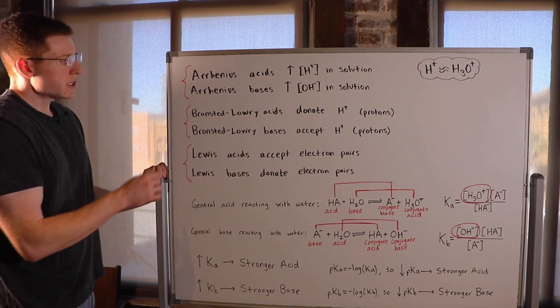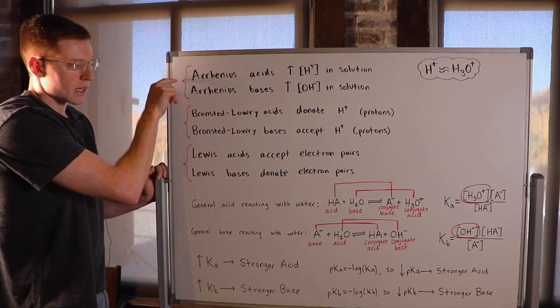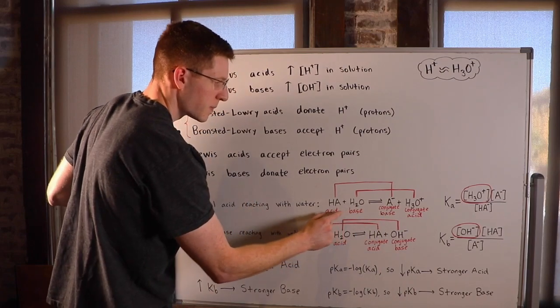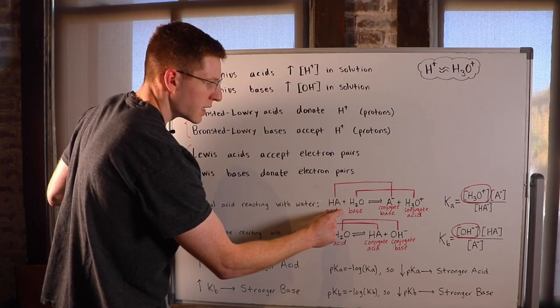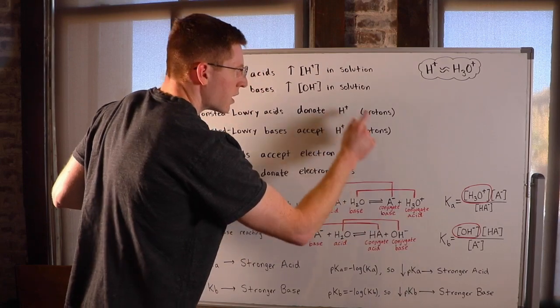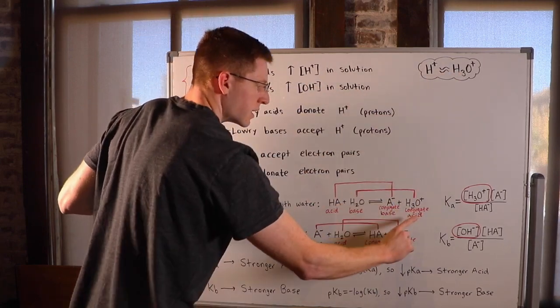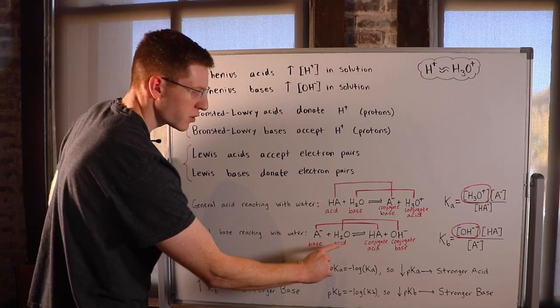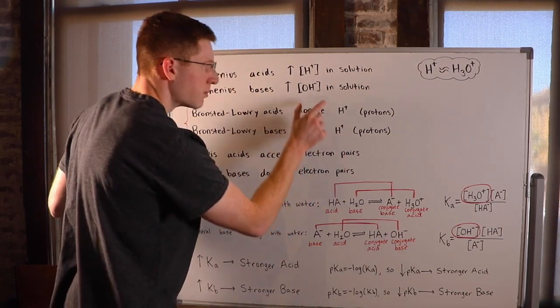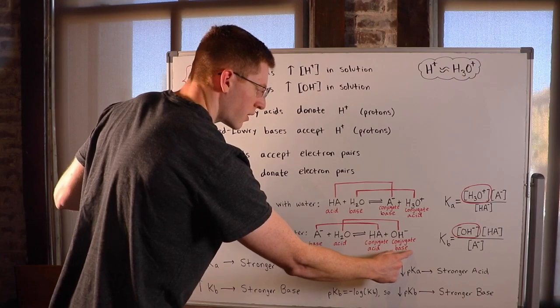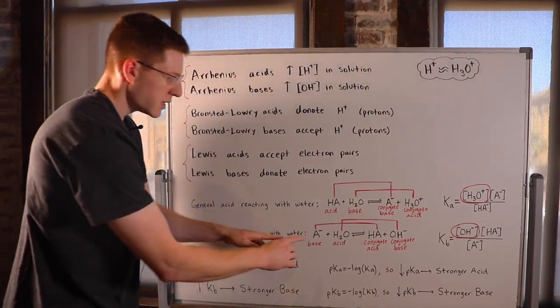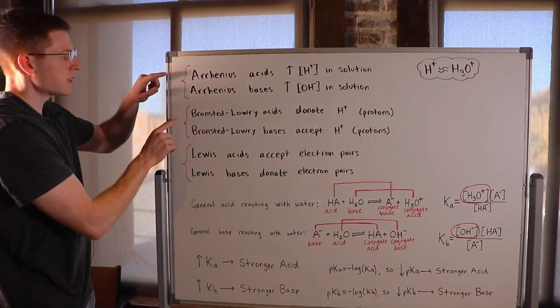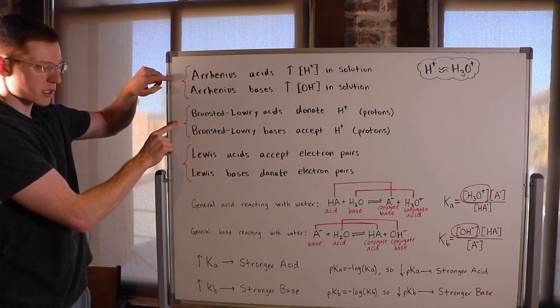Notice, you can also see how the Arrhenius definition explains some of what happened here. This acid resulted in an increased concentration of H3O+ in the solution, while this base here resulted in an increased concentration of OH- in the solution here on the product side. So see how these acids and bases can fit the requirement for multiple definitions simultaneously.